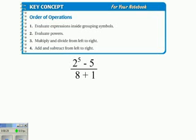So you have to do everything that's on the top first and you have to do everything that's on the bottom first. Now on the top, I have to, according to the order of operations, evaluate expressions inside grouping symbols. I don't have any grouping symbols on the top, so I can ignore that one and go right to number two.